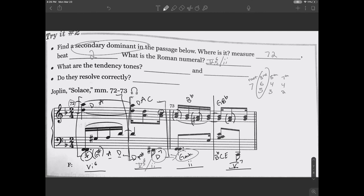The tendency tones are going to be the 3rd and 7th. So in D7 is going to be F sharp and a C. F sharp should resolve to G and C should resolve to B flat. Looking at the music, the F sharp does resolve to G and the C does resolve to B flat.